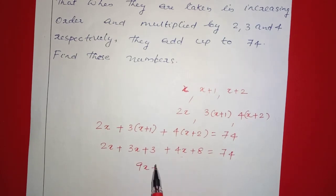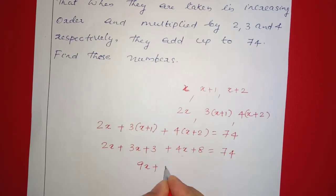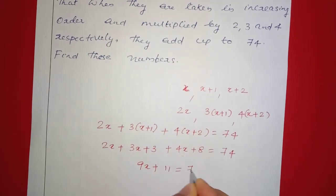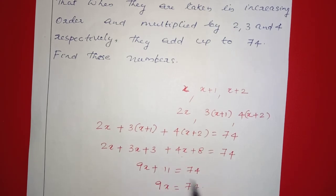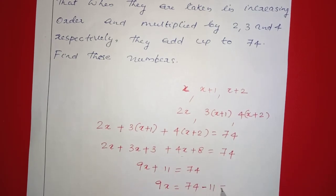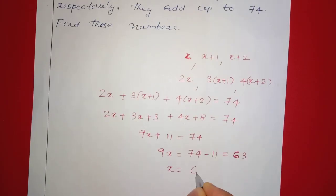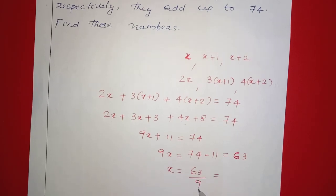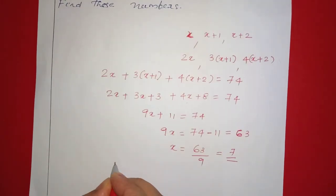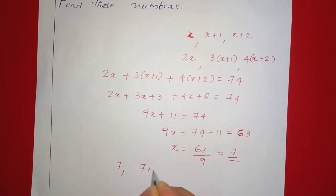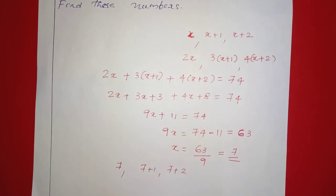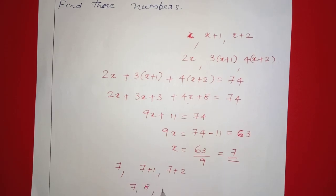So 9x plus 3 plus 8, which is 11, is equal to 74. Therefore 9x is equal to 74 minus 11, which is 63. So x is equal to 63 divided by 9. Since 9 times 7 is 63, x is equal to 7. The three numbers are x, x plus 1, x plus 2 — that is, 7, 8, and 9.